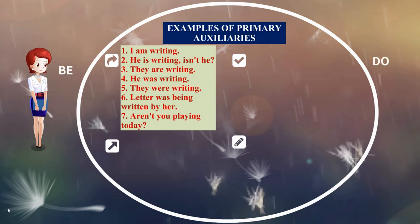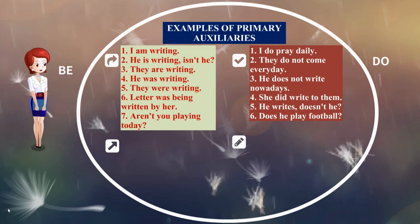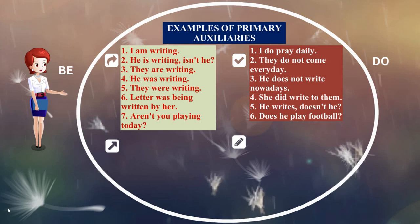Now the 'do' forms. 'I do pray daily' — 'do' is used as is. 'They do not come every day' — the negative form. 'He does not write nowadays' — singular present uses 'does'. 'She did write to them.' 'He writes, doesn't he?' — a question tag. 'Does he play football?' — a question form. All these are primary auxiliary forms of 'to do'.